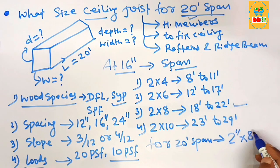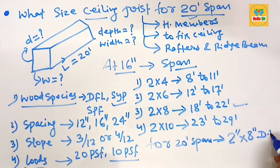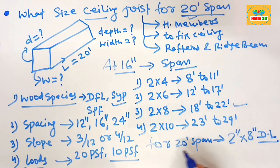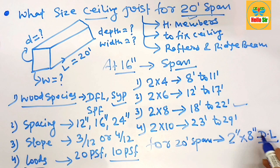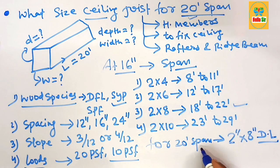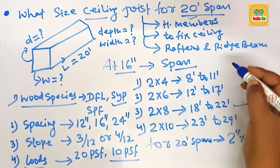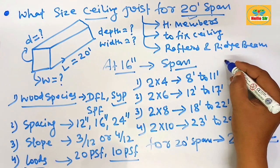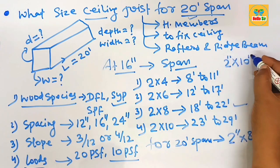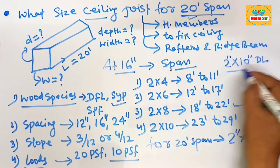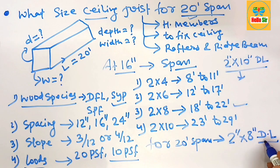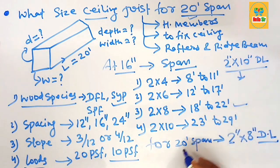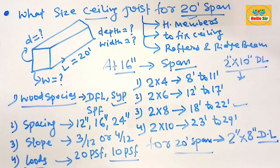From an engineering point of view, you need 2x8 dimensional lumber as a ceiling joist for a 20-foot span. However, builders may choose 2x10 dimensional lumber for greater stability. So you can use either 2x8 or 2x10 dimensional lumber as a ceiling joist for a 20-foot span.